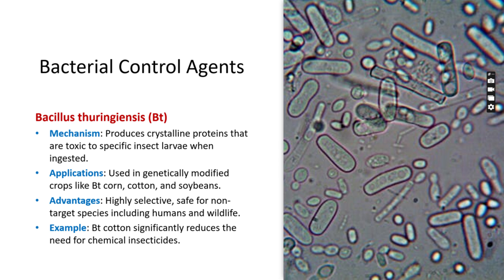A prime example of a bacterial agent is Bacillus thuringiensis (Bt). Bt produces crystalline proteins that are toxic to specific insect larvae when consumed. These proteins disrupt the larvae's digestive systems, leading to death.